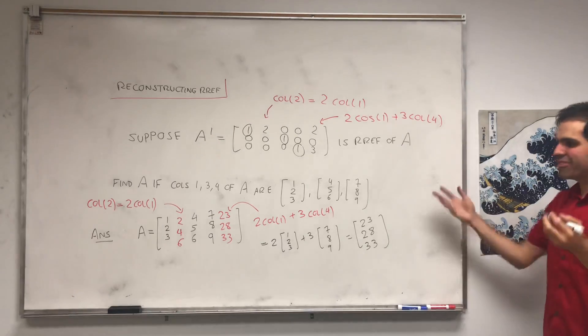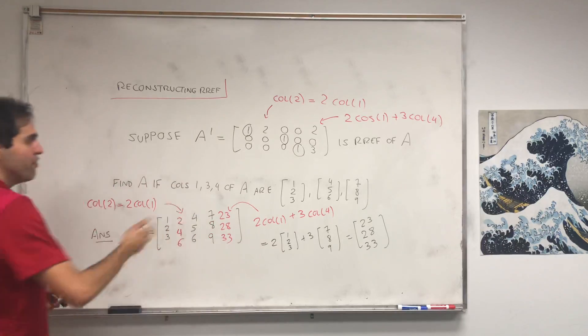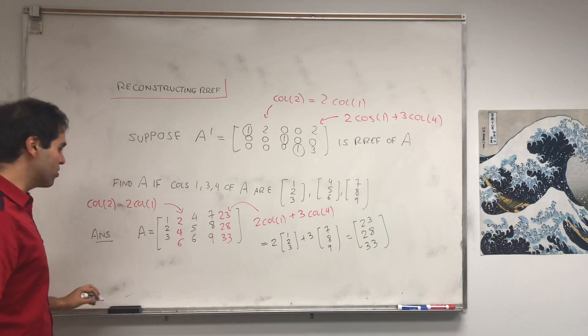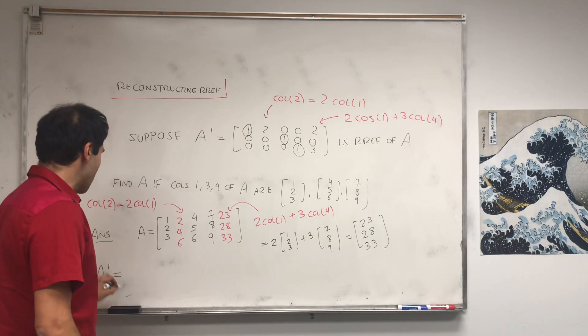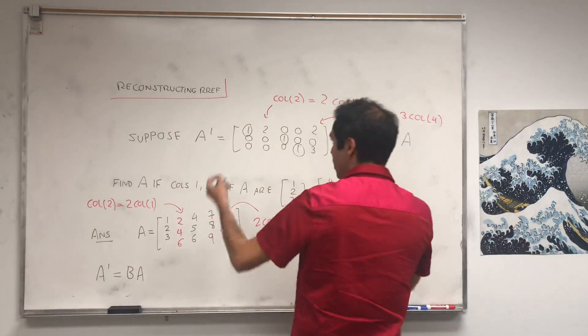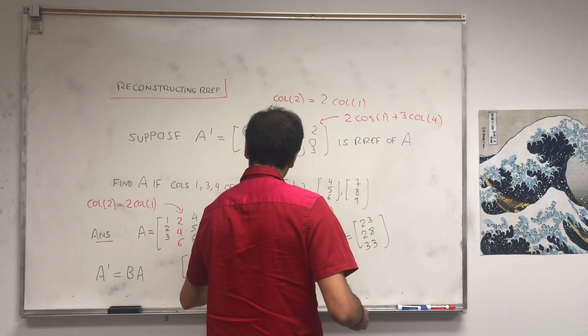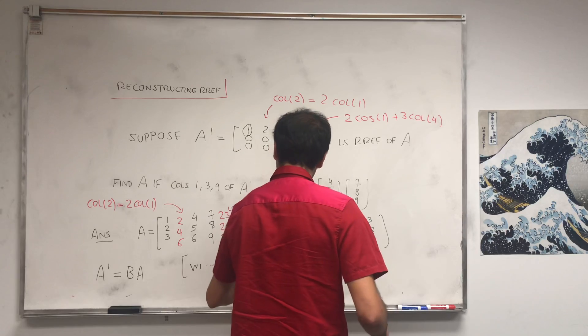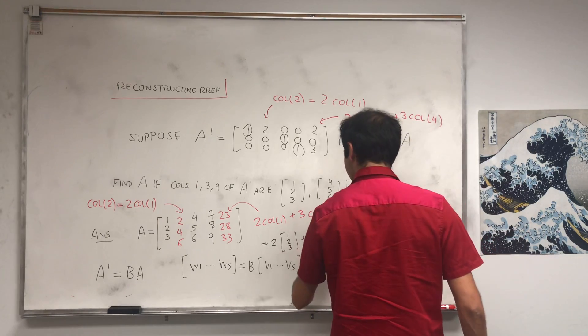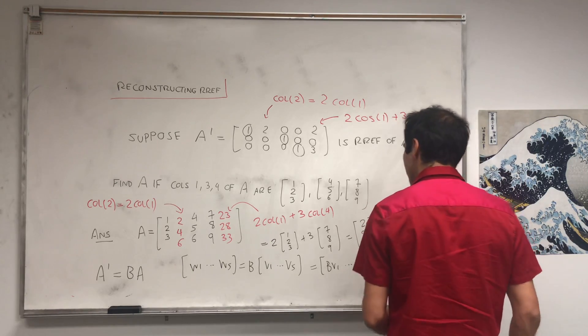So you have recovered your matrix A using the reduced row echelon form. And again, if you're curious why this is true, it's because row reducing is like multiplying by an invertible matrix. So A prime is BA, and then if you see the columns of A prime are W1 up to W5, that equals B times the columns V1 up to V5, and this is just B times V1 up to B of V5.